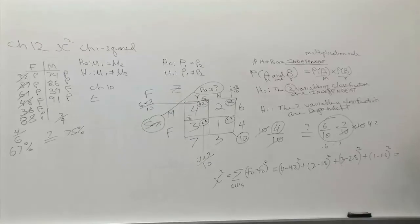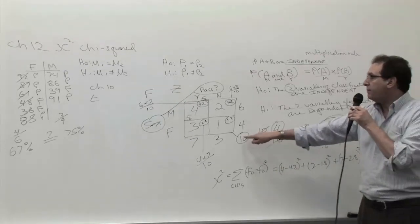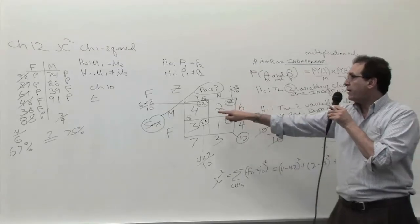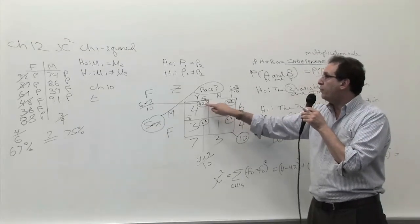The problem by doing that is that, let's say instead of having 10 people, we had 100 people. Well, if you had 100 people, you'd expect 40 people here and 42 people here. So 40 minus 42 is 2, and when you square the 2, the difference is going to come out to 4.